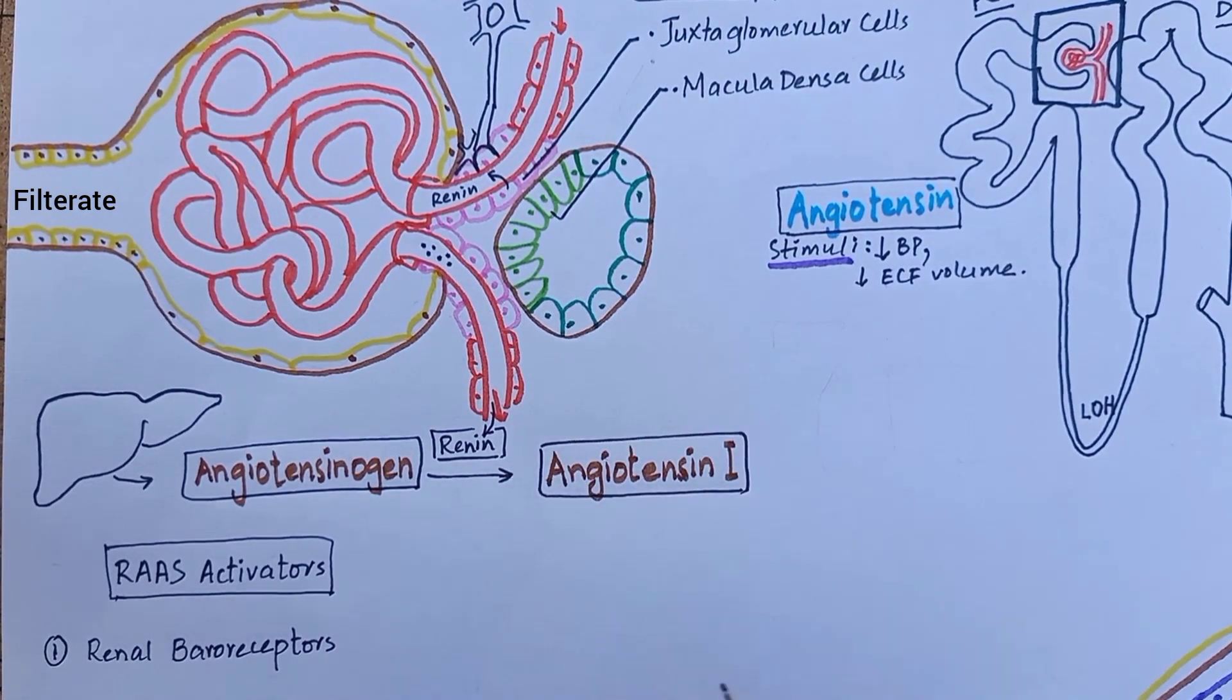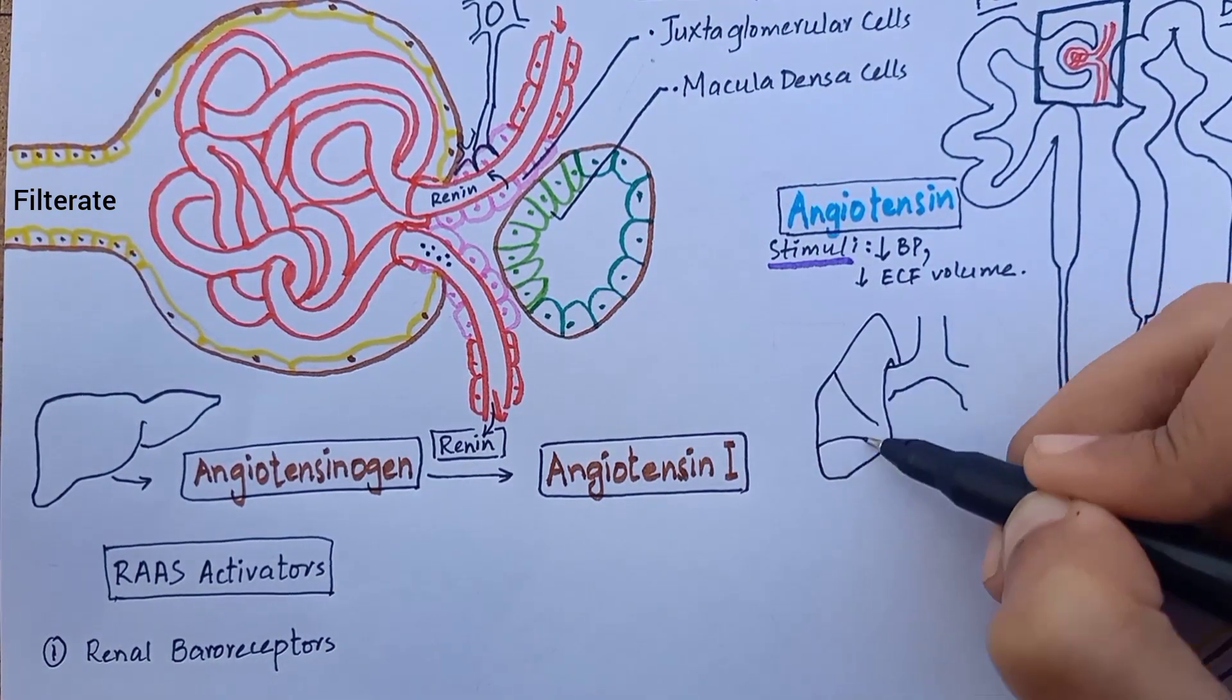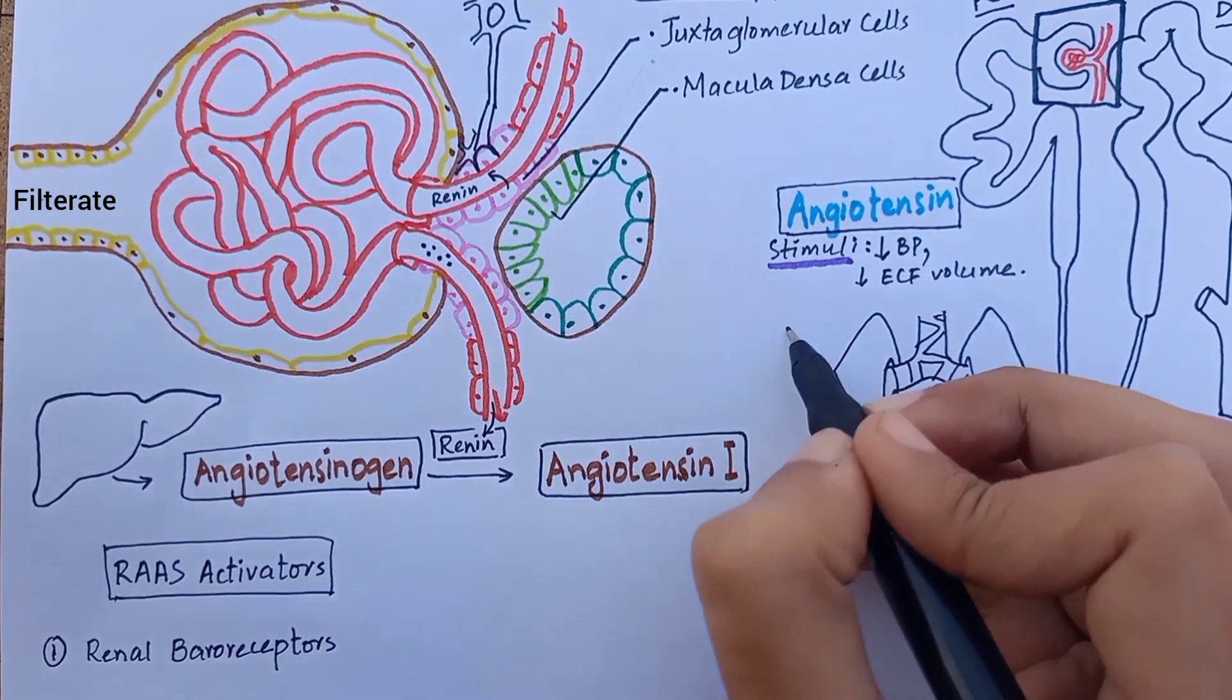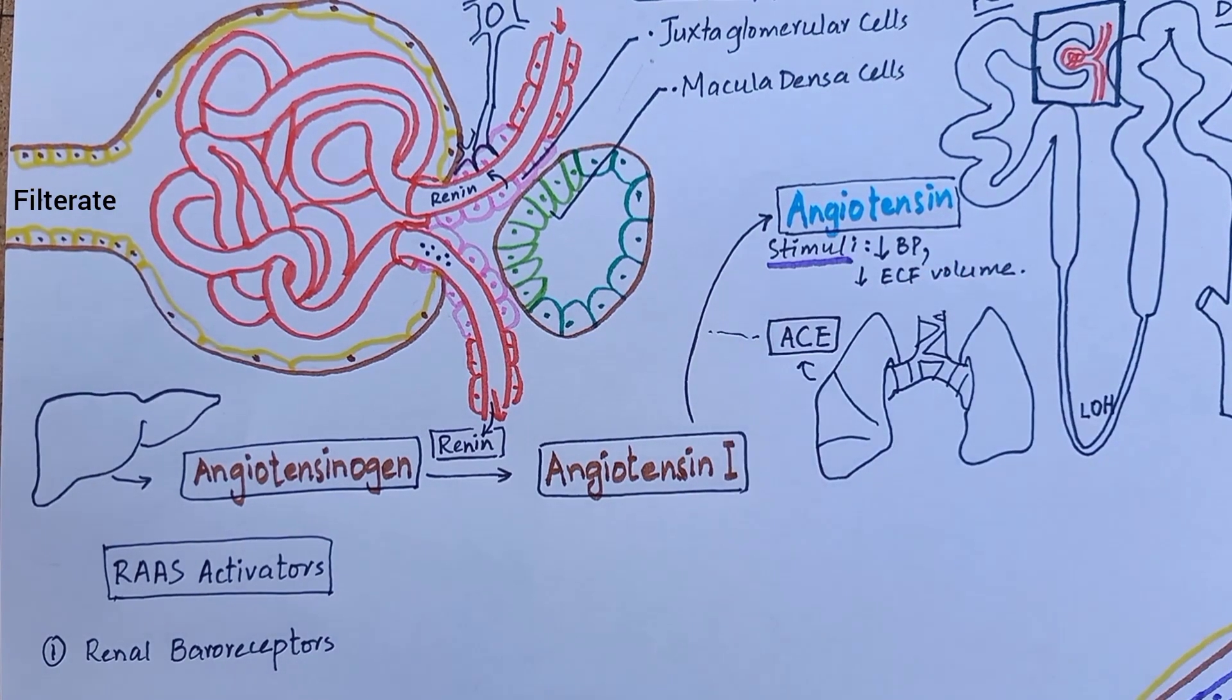As angiotensin 1 travels through blood, there is an enzyme in alveolar endothelium of lungs called angiotensin converting enzyme. The angiotensin converting enzyme converts angiotensin 1 into angiotensin 2.